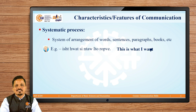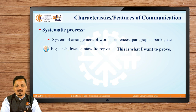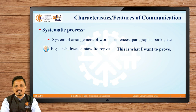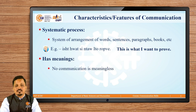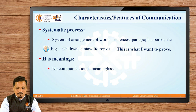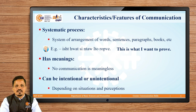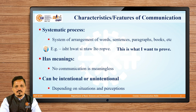We can easily read the second version because we have this systematic process in our mind, and when it is disturbed, we cannot identify it. So communication is a systematic process. Next, communication has meanings — no communication is meaningless. Whatever you say, do, or exhibit conveys some meaning. Finally, communication can be intentional or unintentional — sometimes we do something we do not intend to show, but unintentionally that communication takes place depending on the situation and perceptions of people.